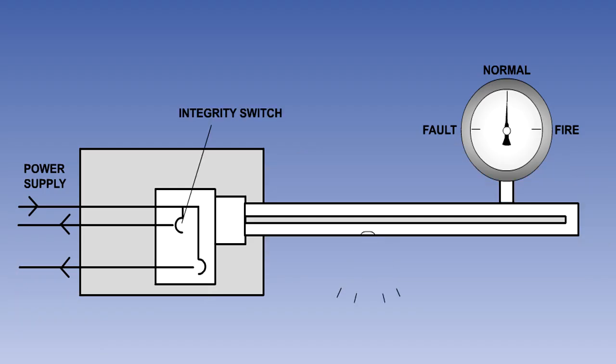Should the tube be damaged and the helium gas be released from the core, the pressure will fall, and the normally closed integrity pressure switch will open. This will cause a fault indication on the control panel or electronic systems display.